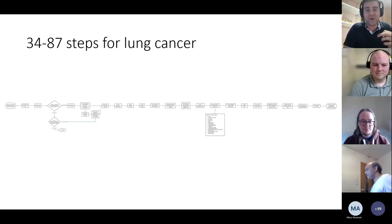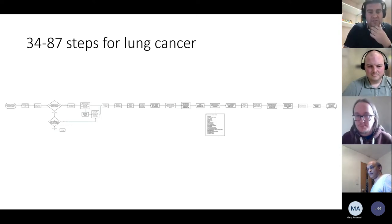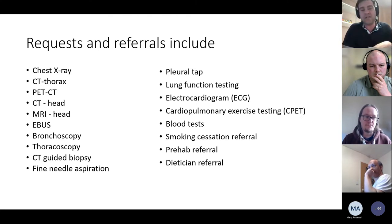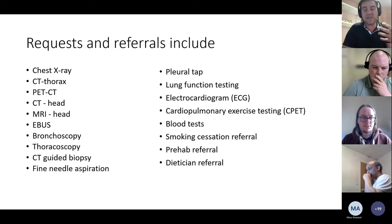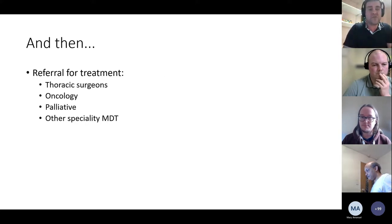There are 34 to 84 steps on this slide. That central box is where all the bits happen — you have lots of different investigations: X-rays, camera tests down the lungs, lung function tests, bloods, ECGs, and so on. Each of those adds another three or four steps: a referral letter goes out, the patient has the test, the test needs reporting, and so on.